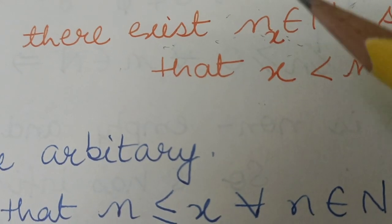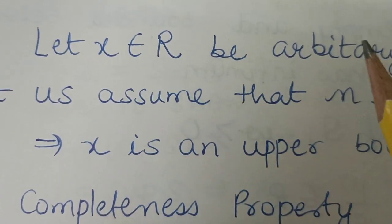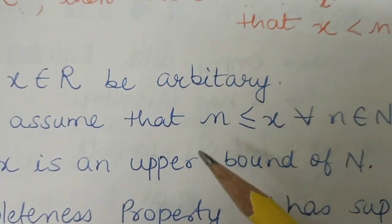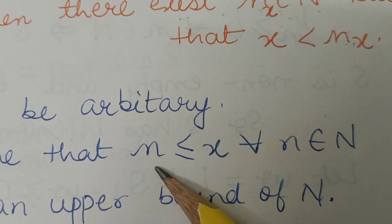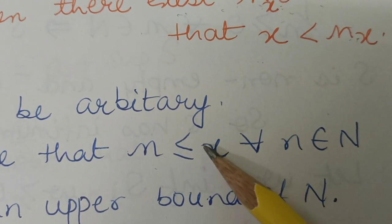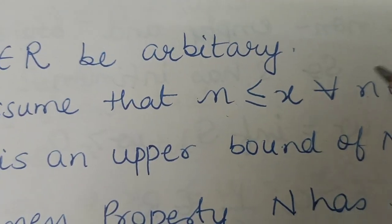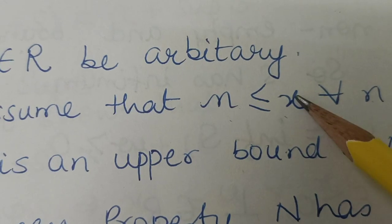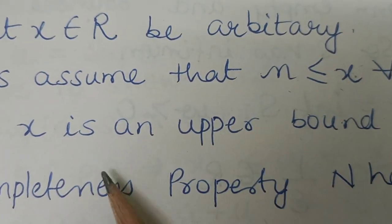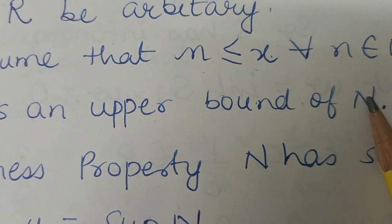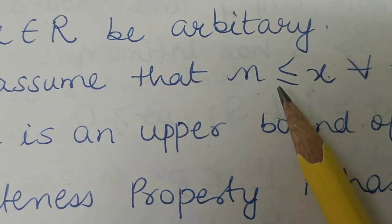Now we will prove this by contradiction. Since x is an arbitrary real number, we will assume the opposite — that n is less than x for all n belonging to the natural numbers. This means x is greater than or equal to all natural numbers, so x would be an upper bound of the set of natural numbers.